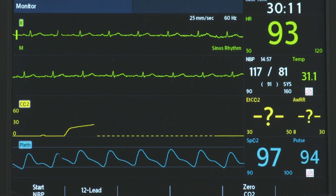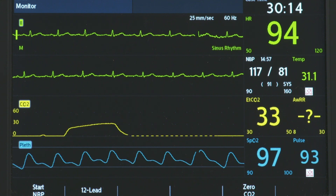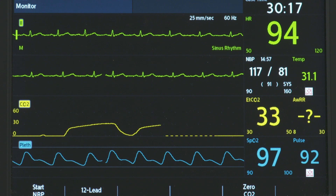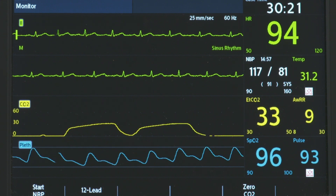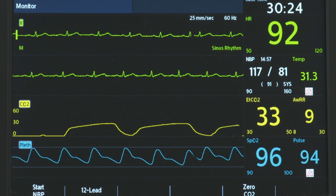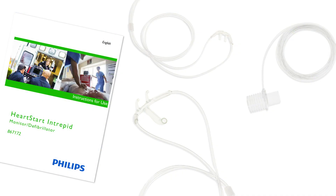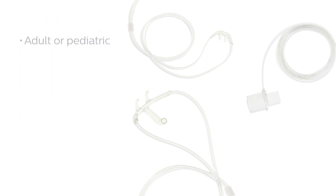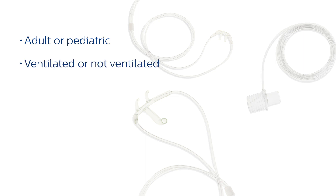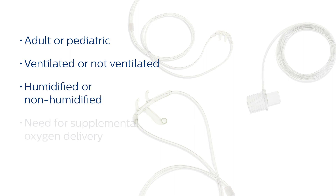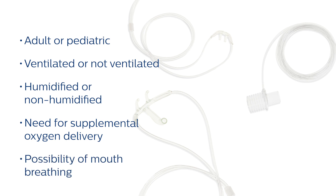The HeartStart Intrepid can also monitor end-tidal carbon dioxide, or ETCO2. CO2 monitoring is available in AED, monitor, pacer, and manual defib modes, and on both adult and infant-child patients. Consult the HeartStart Intrepid IFU to determine the appropriate cannula and accessories. There are some factors to consider when selecting accessories: patient type (adult or pediatric), patient airway status (ventilated or not ventilated), and if ventilated, humidified or non-humidified. Also consider need for supplemental oxygen delivery and possibility of mouth breathing.